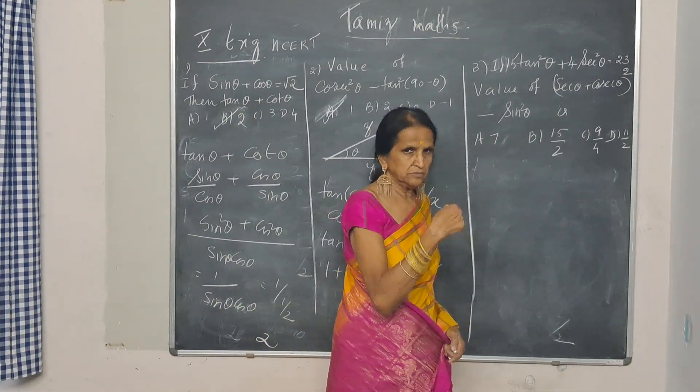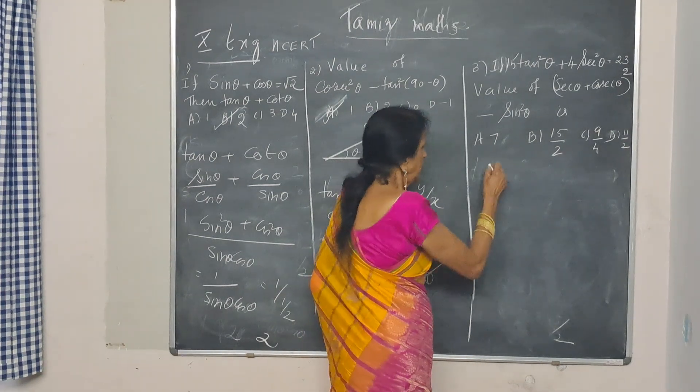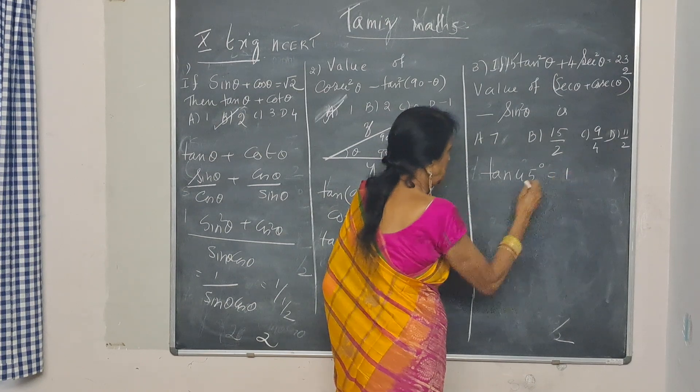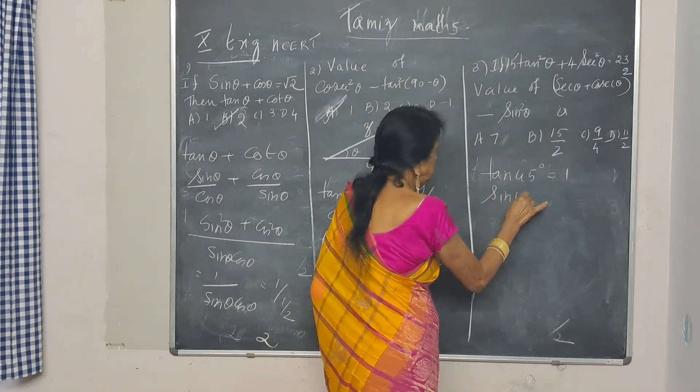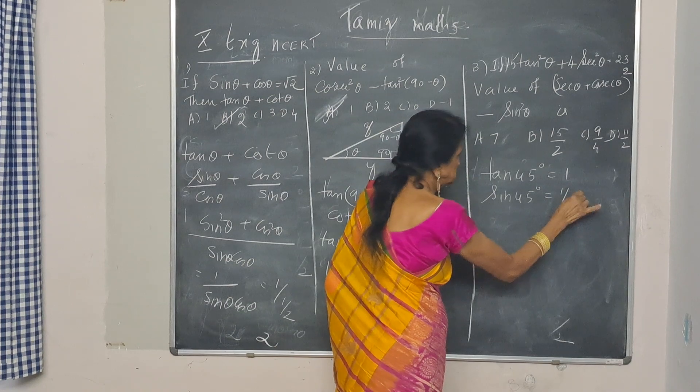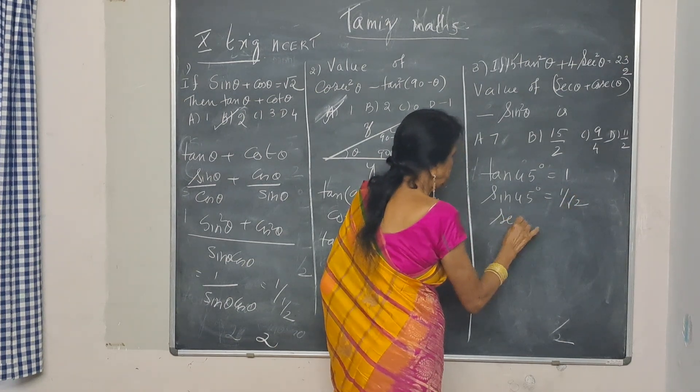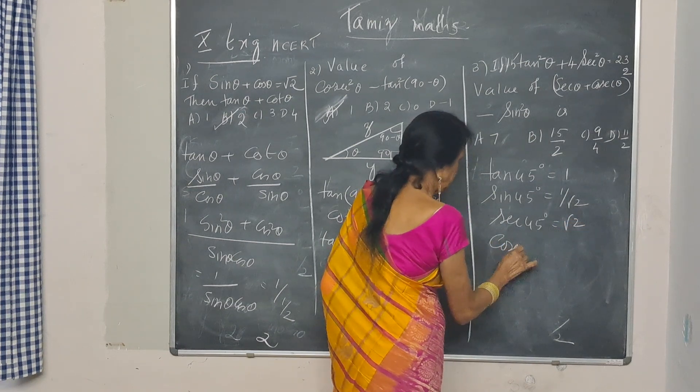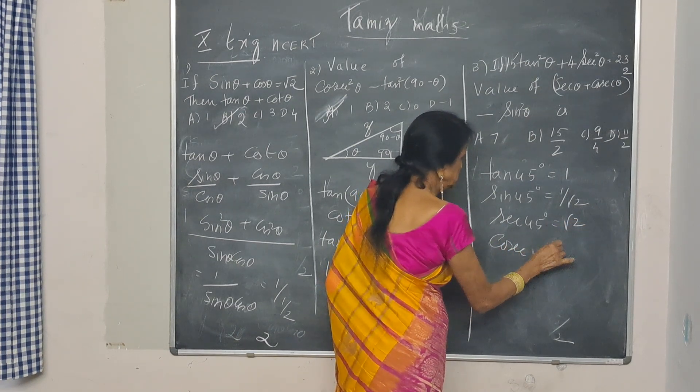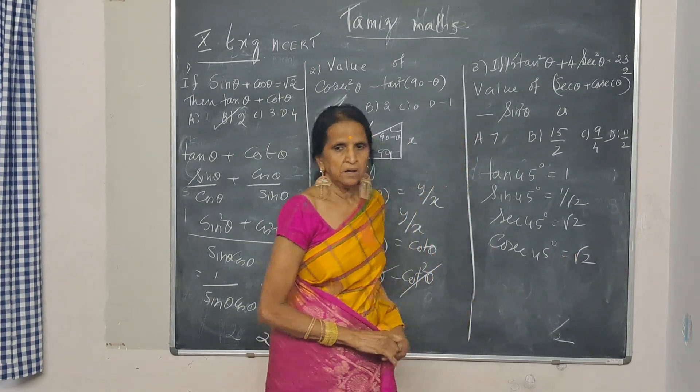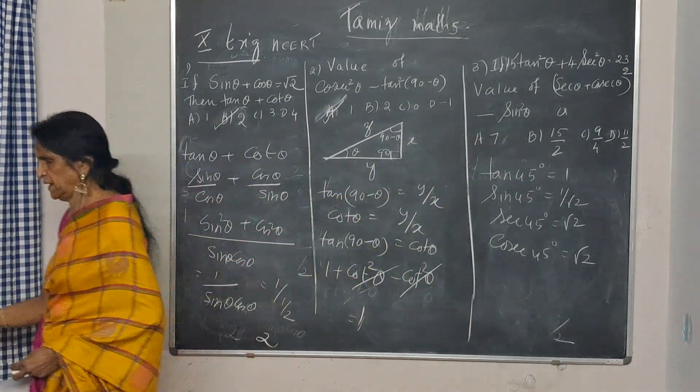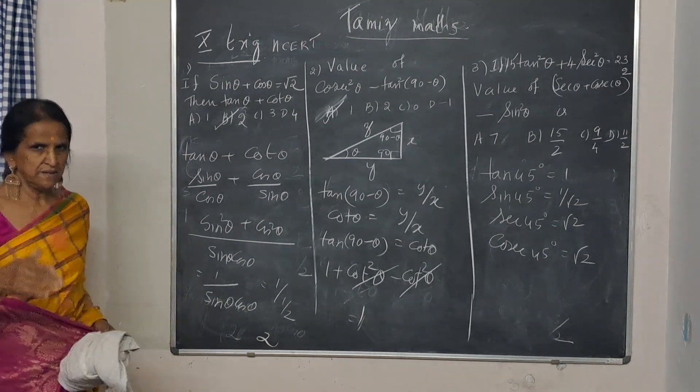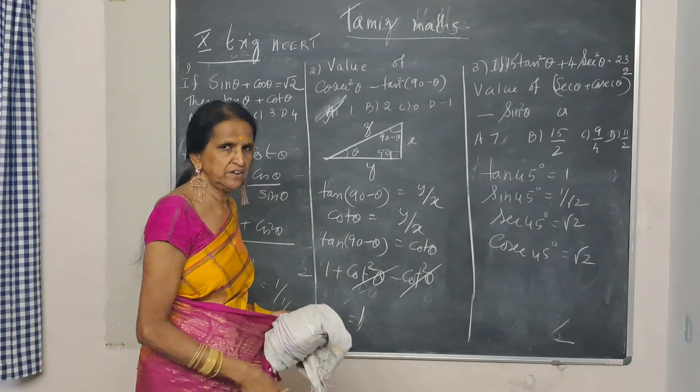Next, we go for the third one. Now, before I work the third one, I will give you the value of few angles. Tan of 45 degrees is 1. Sine of 45 degrees is 1 by root 2. Secant 45 degrees is root 2. And cosecant 45 degrees is also root 2. These values are to be known by you by heart.